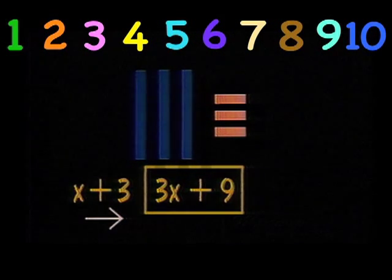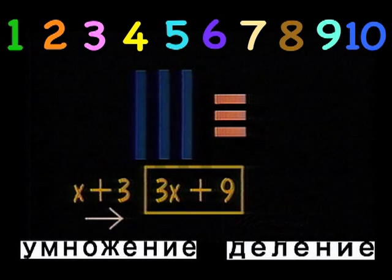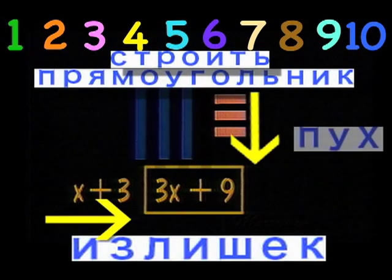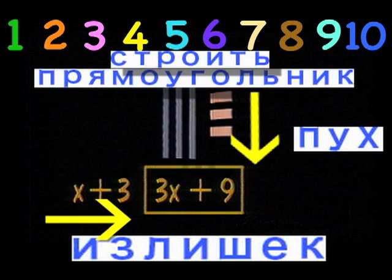And since multiplication and division are different, in multiplication we counted our rectangle over and up. In division, we will build and count our rectangle over and down. So here is what that looks like.